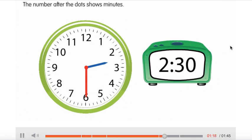The number after the dots shows minutes. The digital clock shows 30 minutes.